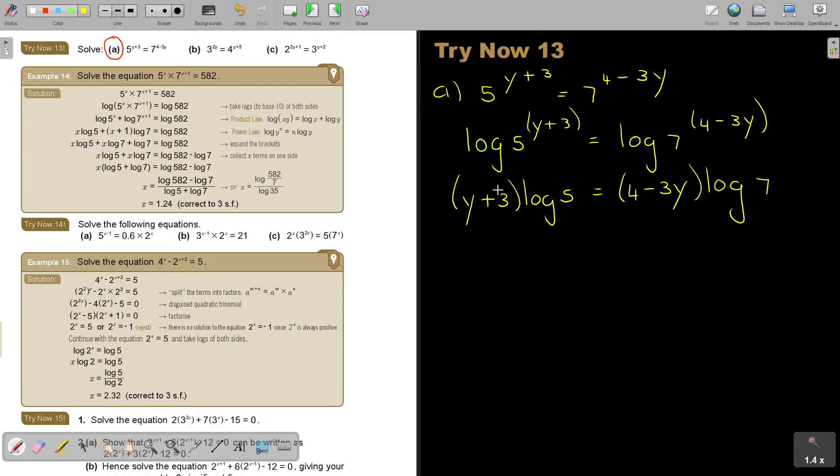Now remember, if it's standing here you cannot, but if it's standing in front you can multiply. So I'm going to say it's Y log 5 plus 3 log 5, and that's equal to 4 log 7 minus 3Y log 7. Now where are the terms with the unknowns? There's the unknown, and there's the unknown.